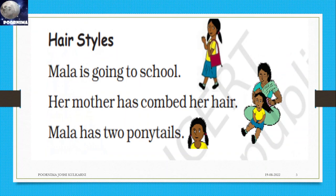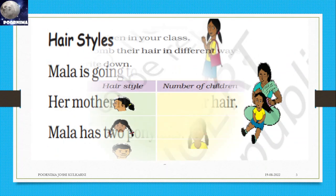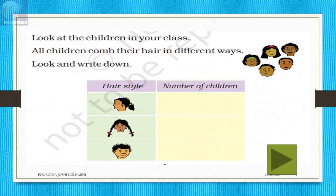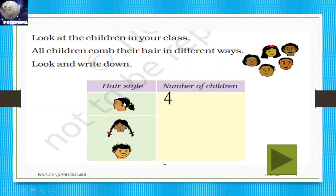Hair style. Mala is going to school. Her mother has combed her hair. Mala has two ponytails. Look at the children in your class — all children comb their hair in different ways. Look and write down. This girl has one ponytail. How many students? I will take four as a number.